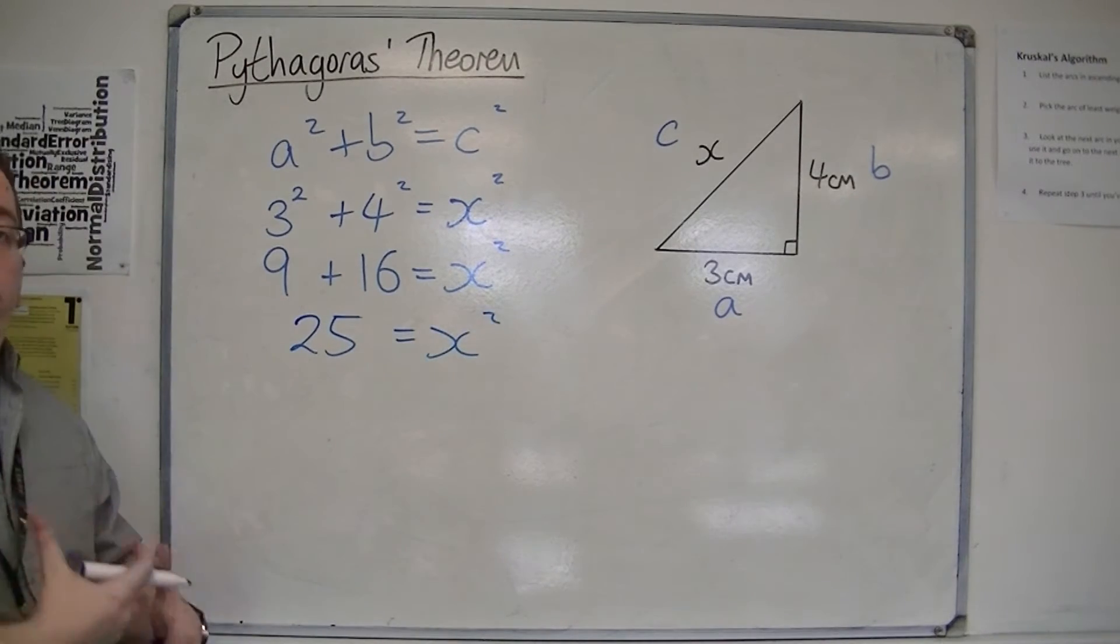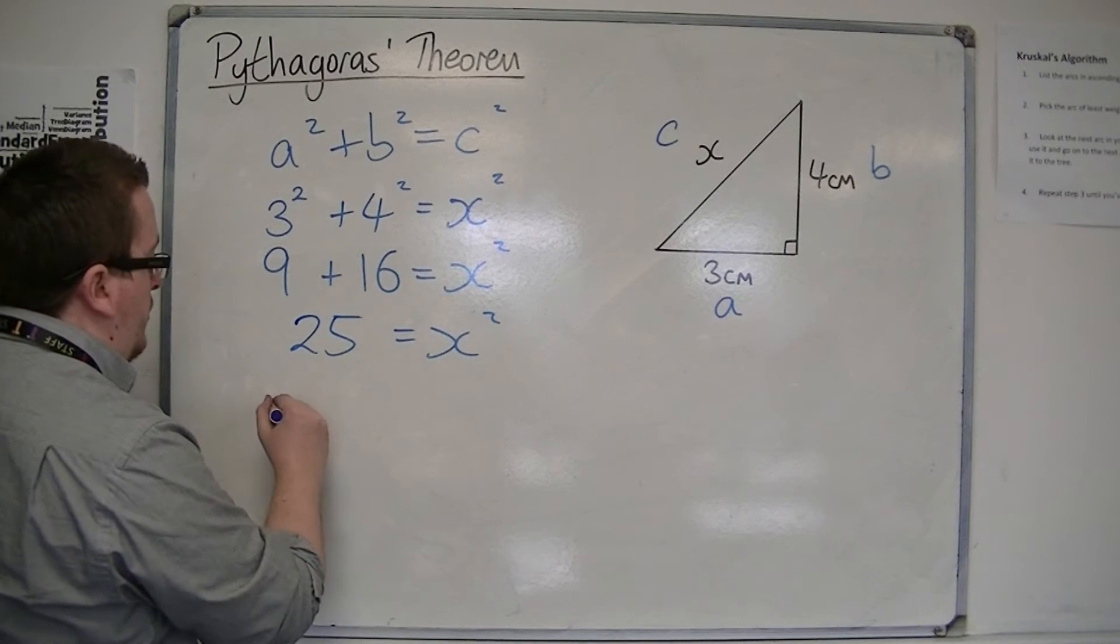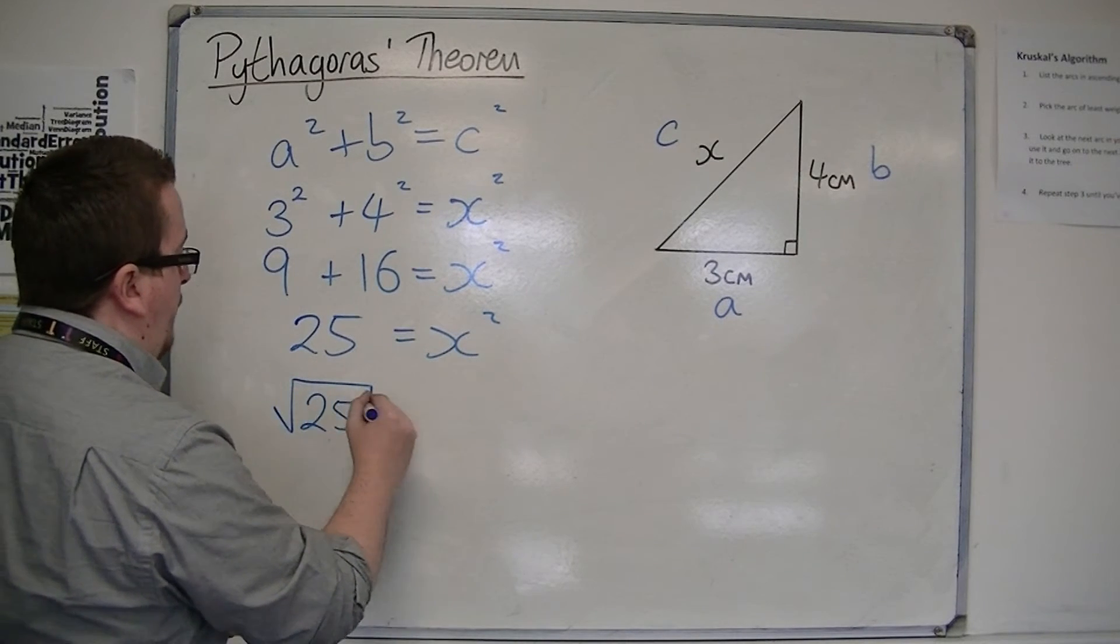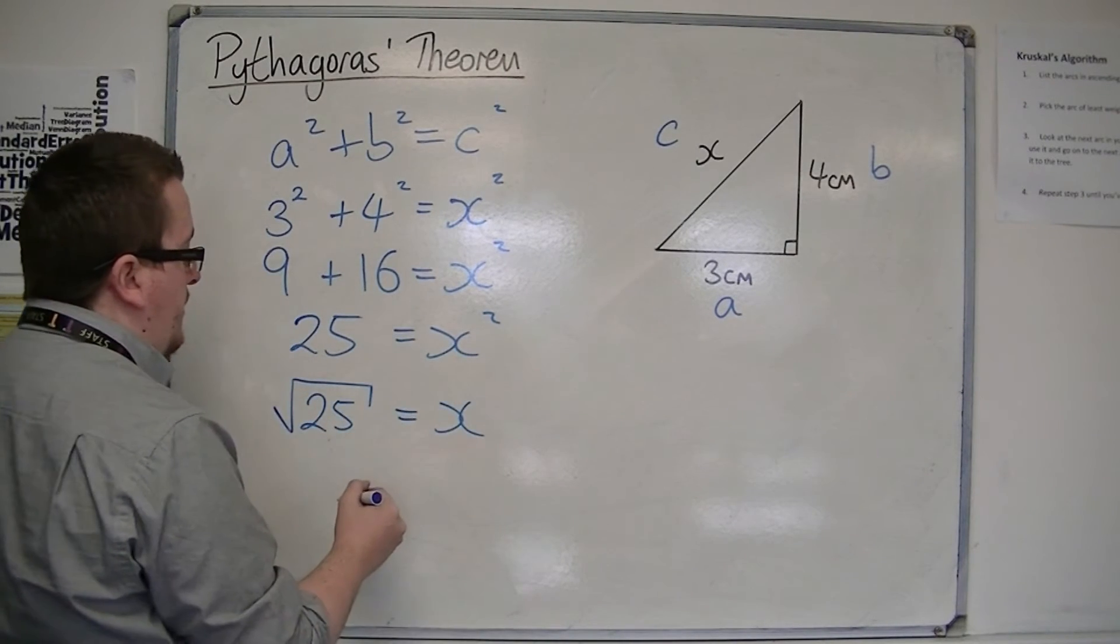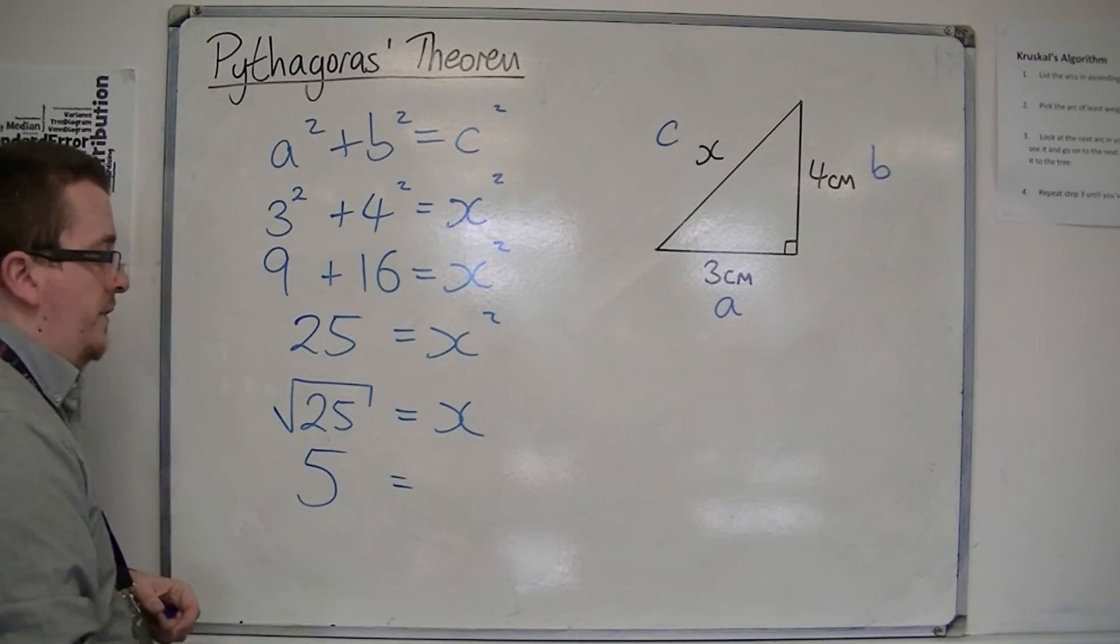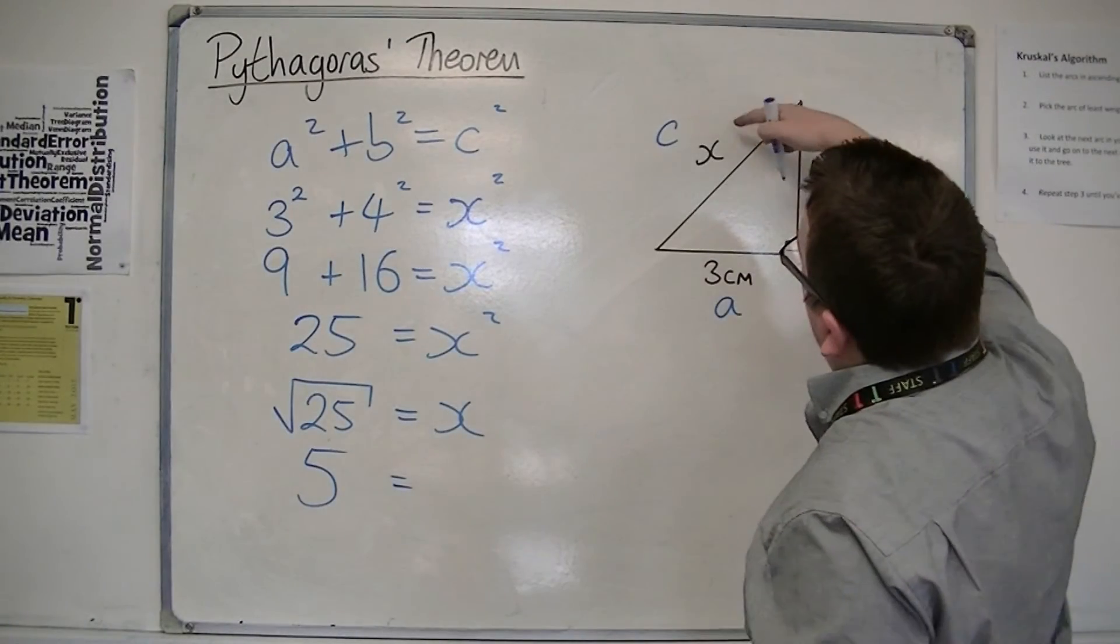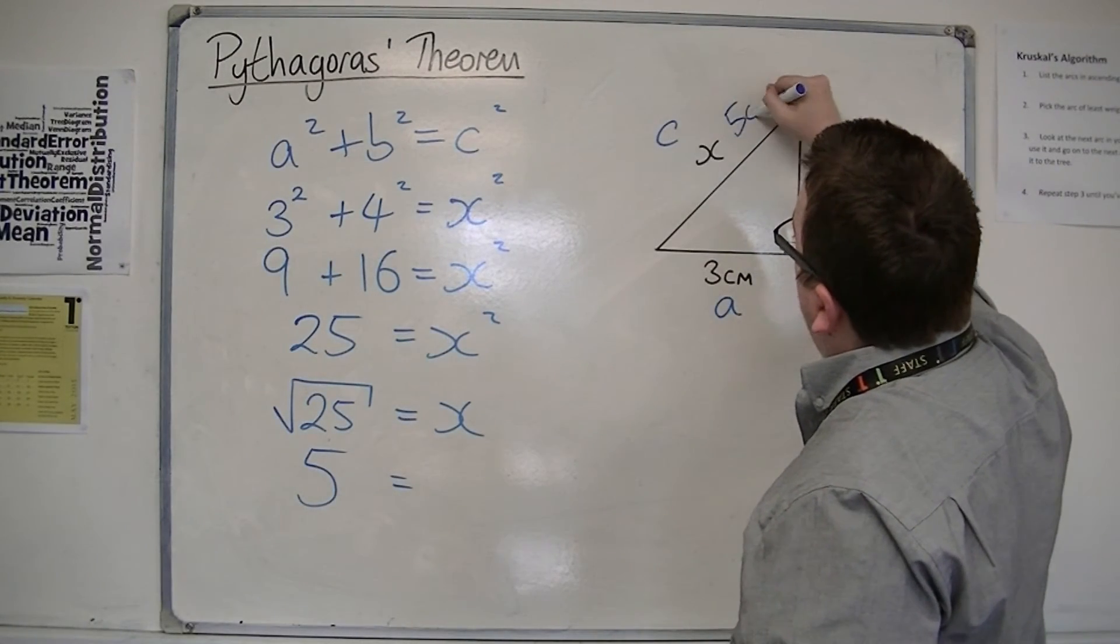And this is where you want to square root both sides. So, you square root the 25 to find the value of X that you want. And the square root of 25 is 5. So, that would mean that X is 5 centimeters long.